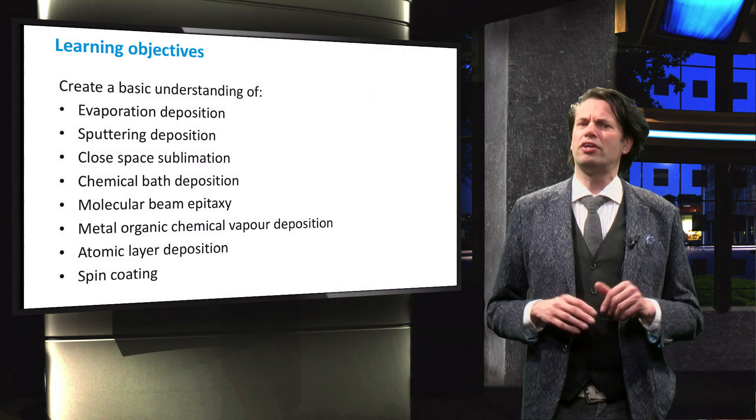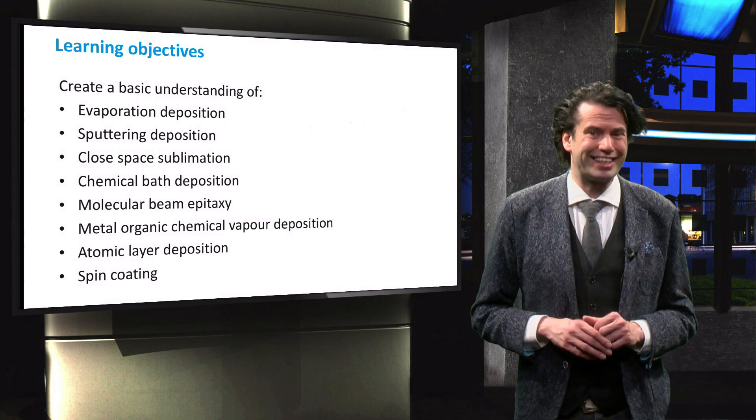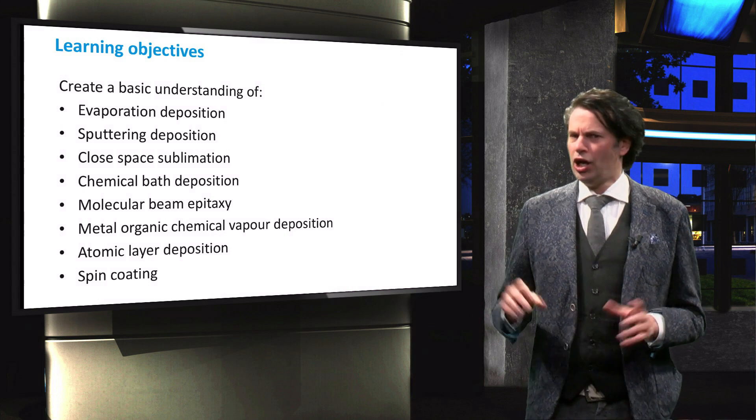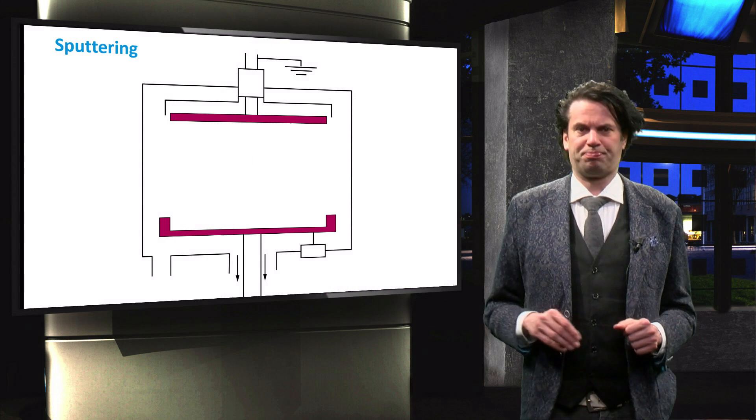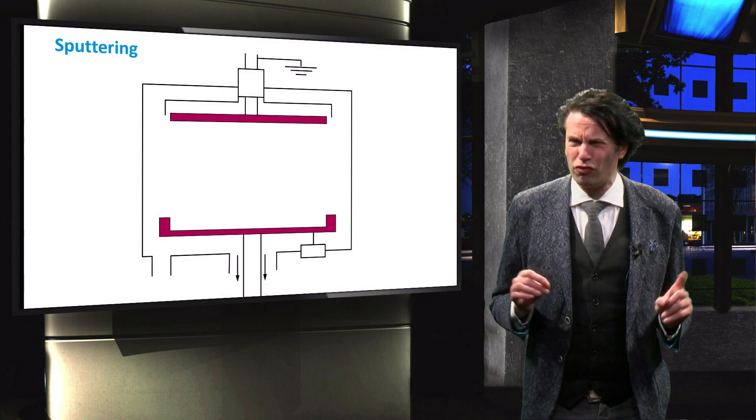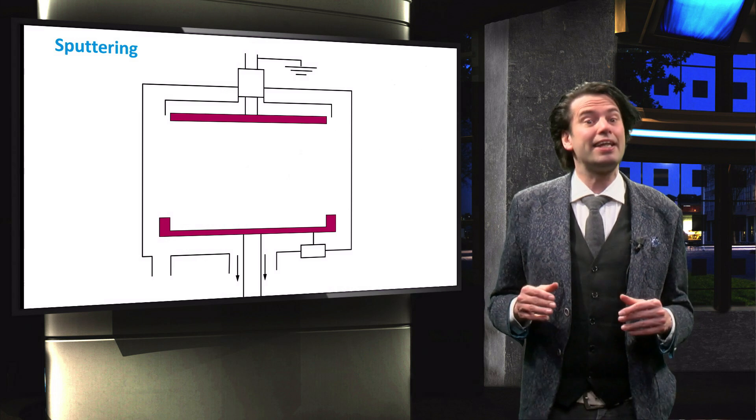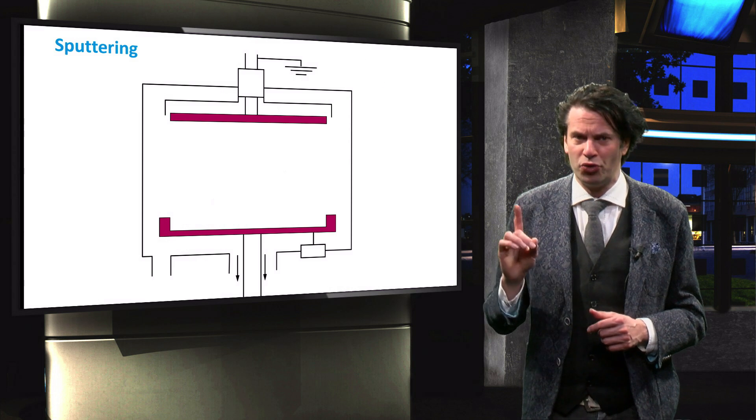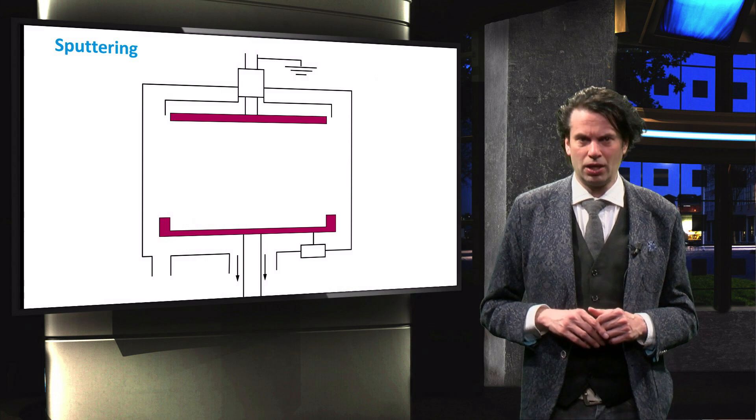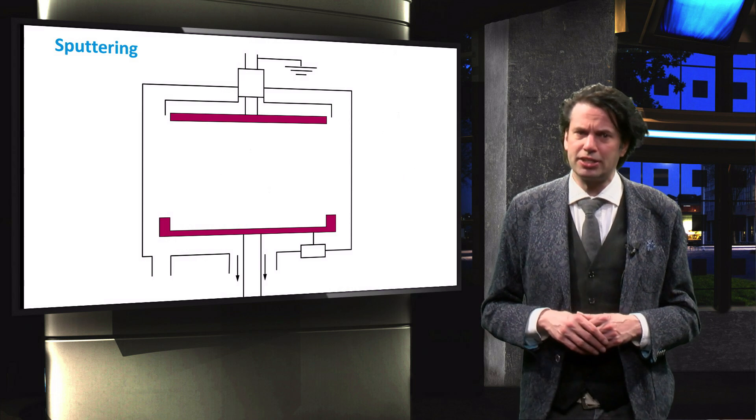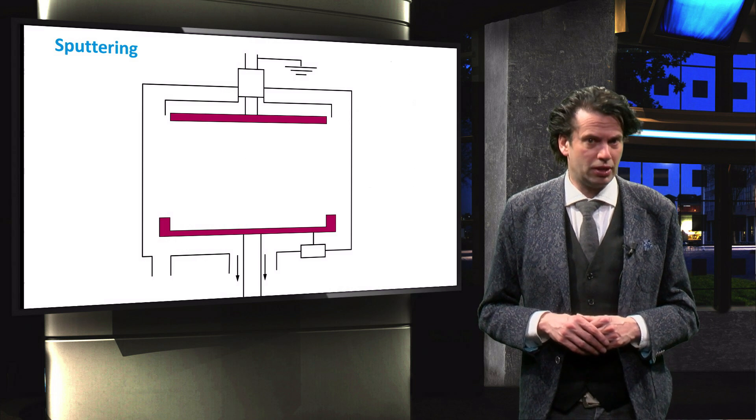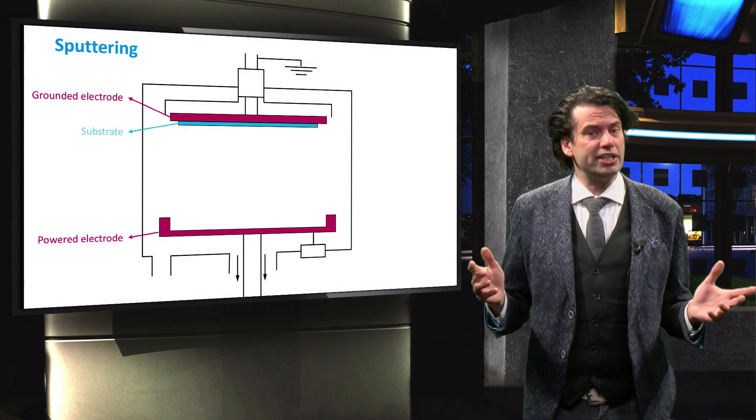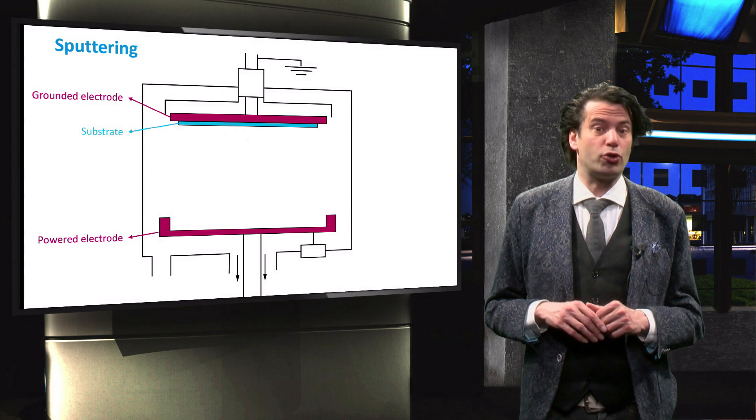Creating a basic understanding of the working principles of these techniques is the learning objective of this video. We start with sputtering deposition. This is a physical vapor deposition technique, which means that it is a vacuum deposition technology that produces the source gas by a non-chemical method. Much like PECVD, sputtering takes place in a vacuum chamber between a grounded electrode and a powered electrode. A substrate is placed at the grounded electrode or anode.